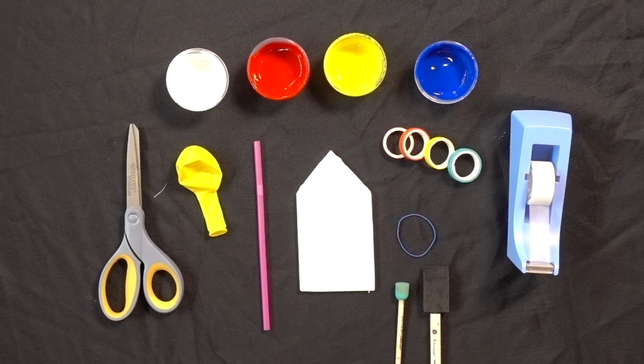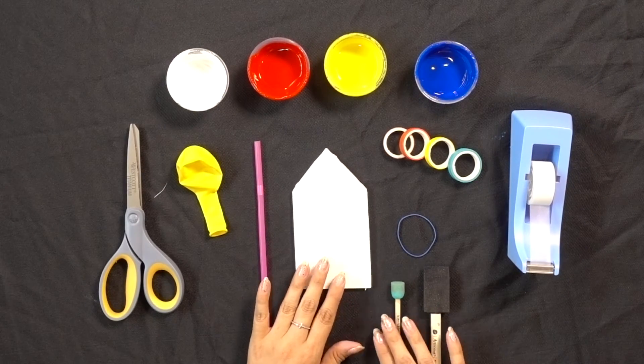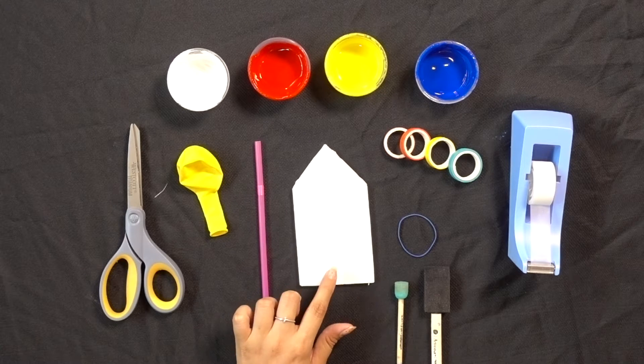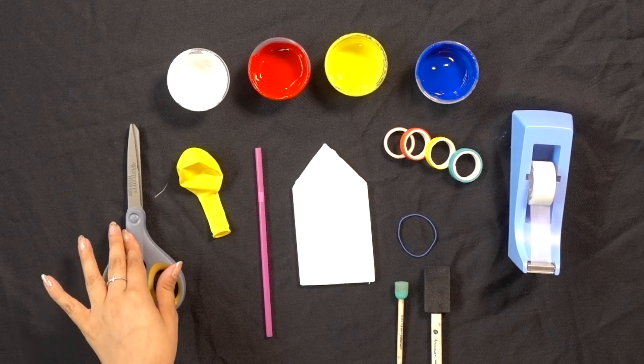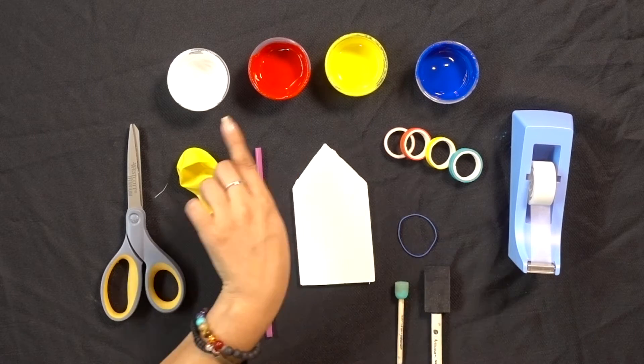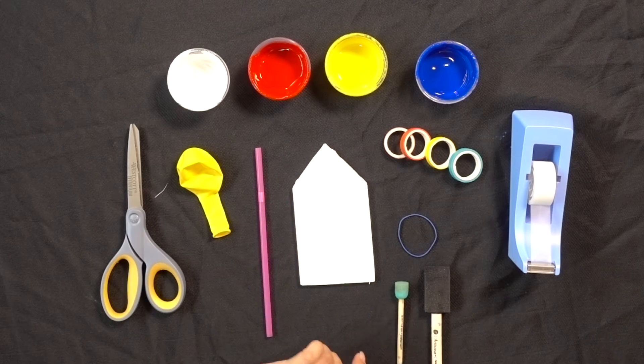Alright guys, let's get started making our very own balloon powered boat. So here you have your materials. You have your foam board, a balloon, and a straw. You do need a pair of scissors, tape, and then any colors you want to decorate your boat with.